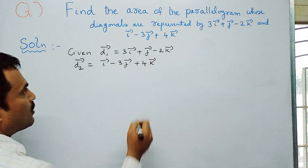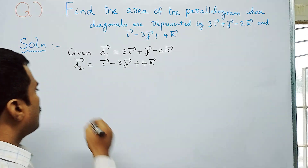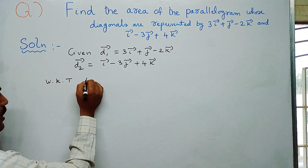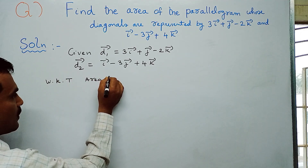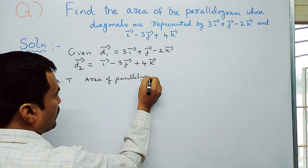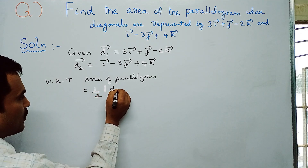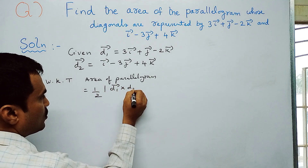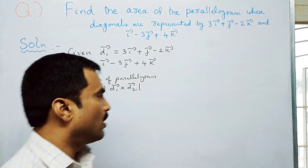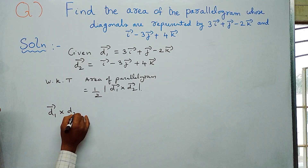We need to find the area of the parallelogram. The formula is: area of parallelogram = ½ |d1̅ × d2̅|. So first we will find d1̅ × d2̅.